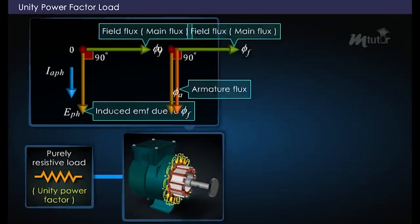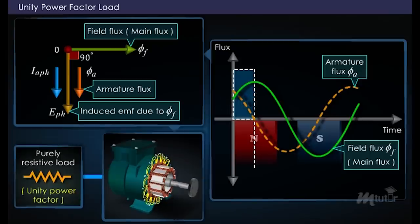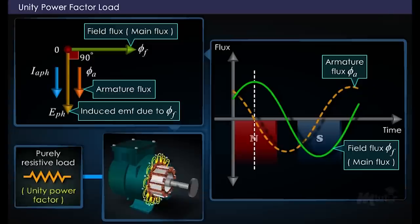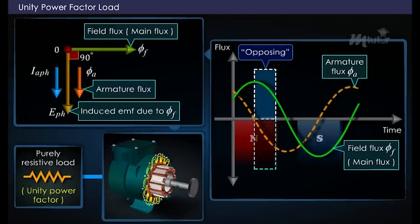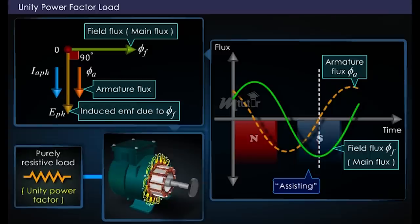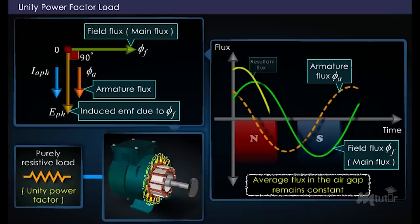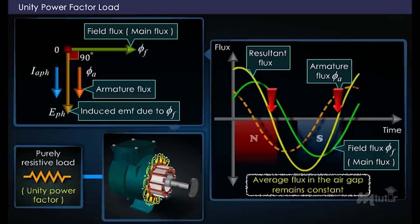From the phasor diagram, the armature flux phi_a lags behind the main flux phi_f by 90 degrees. Representing both fluxes as waveforms, under the left half of the north pole, the main flux and armature flux are in the same direction, so they assist each other. Under the right half of the north pole, they oppose each other. The same occurs under the south pole. Hence, the average flux in the air gap remains constant, but the resultant flux distribution over the pole faces is not even.